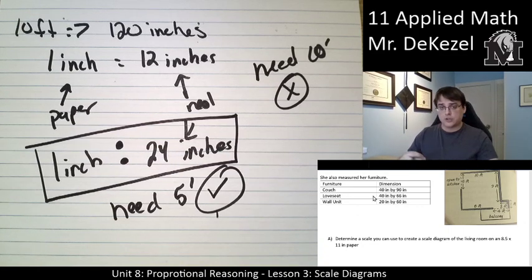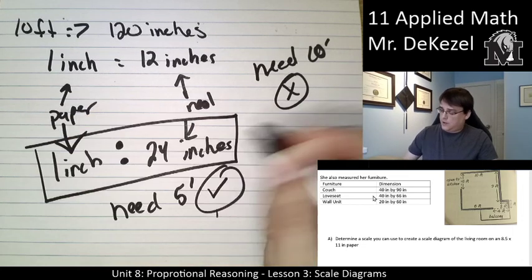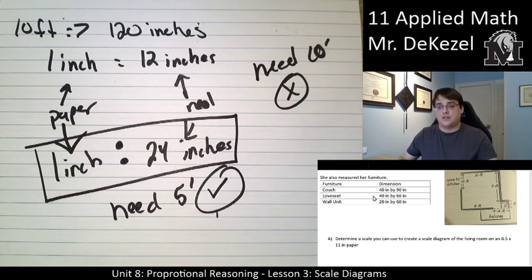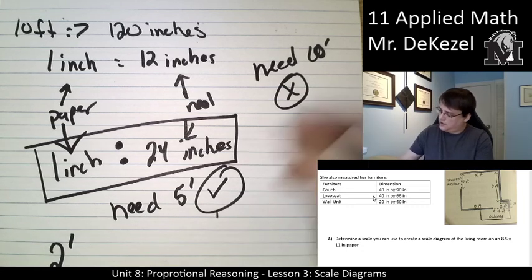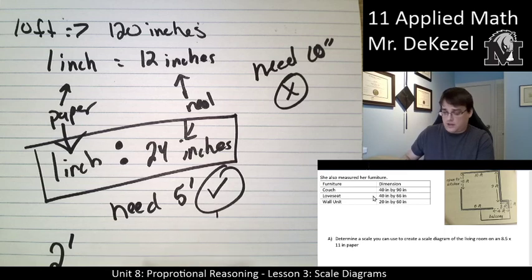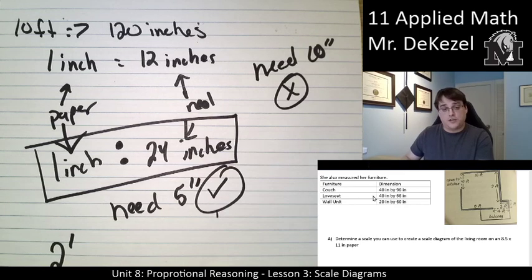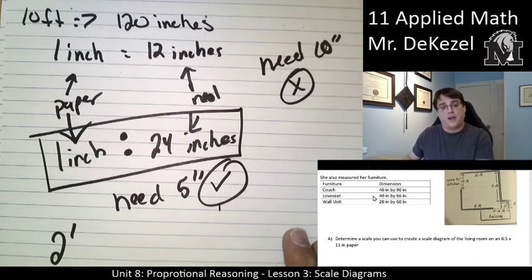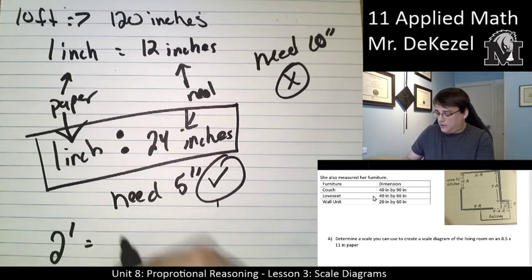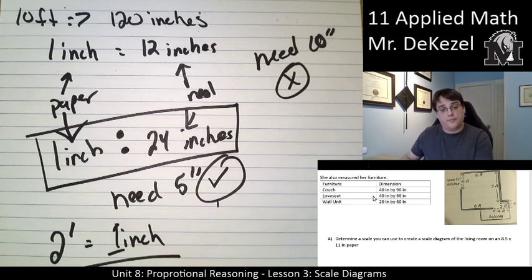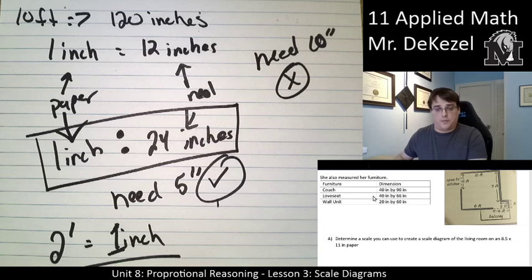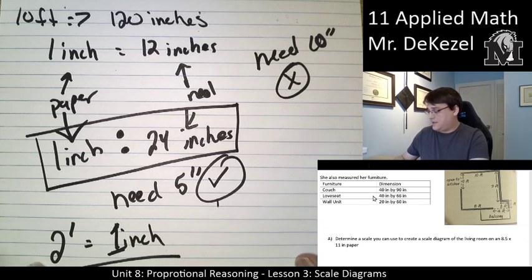So essentially the ratio or the scale that we're going to use is 1 to 24. 1 inch equals 24 inches. 1 inch on the paper equals 24 inches in real life. Essentially what that means is I can take 2 feet on the paper, and that would equal 1 inch on my paper as well. So we should be able to draw this now.